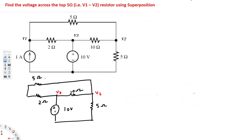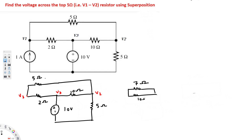Now we check whether we can simplify the circuit further. Looking at the 2 ohm and 5 ohm resistors, those are in series, so we can add them together. The new circuit has a 7 ohm resistor (5 + 2 = 7), a 10 ohm resistor, another 5 ohm resistor, and the 10V voltage source.